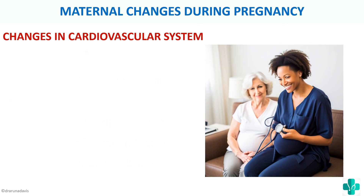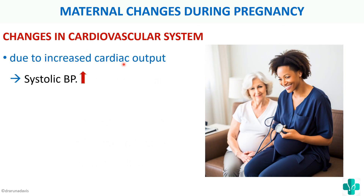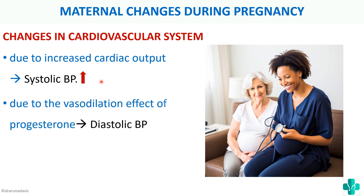Because of increased cardiac output, blood pressure can also change. Systolic BP increases, but due to the vasodilator effect of progesterone, diastolic BP actually decreases. So the main cardiovascular changes are: cardiac output increases, systolic BP increases, and diastolic BP decreases.